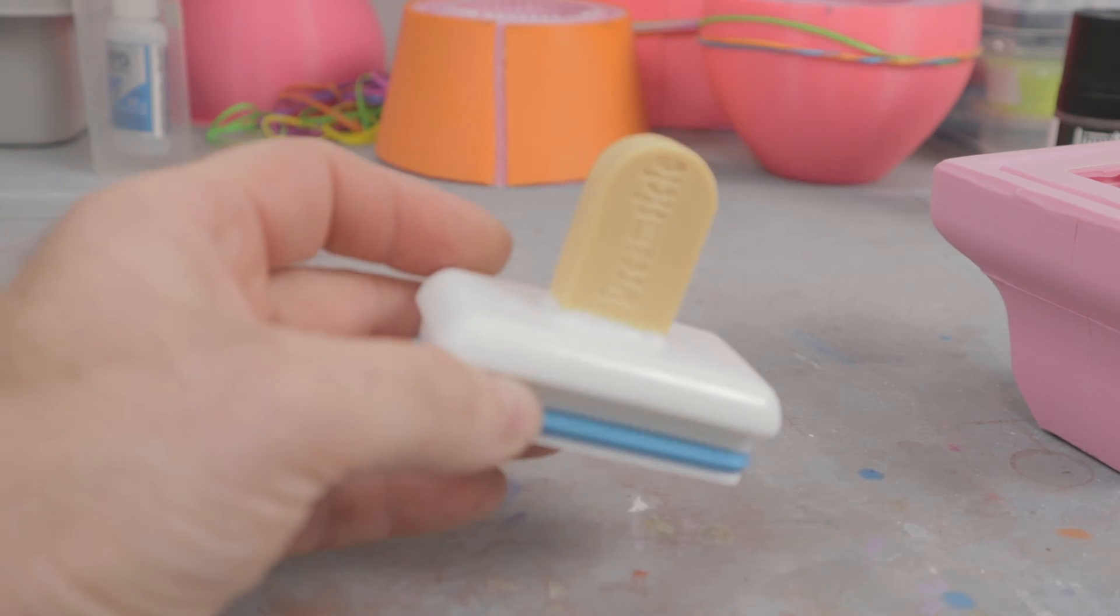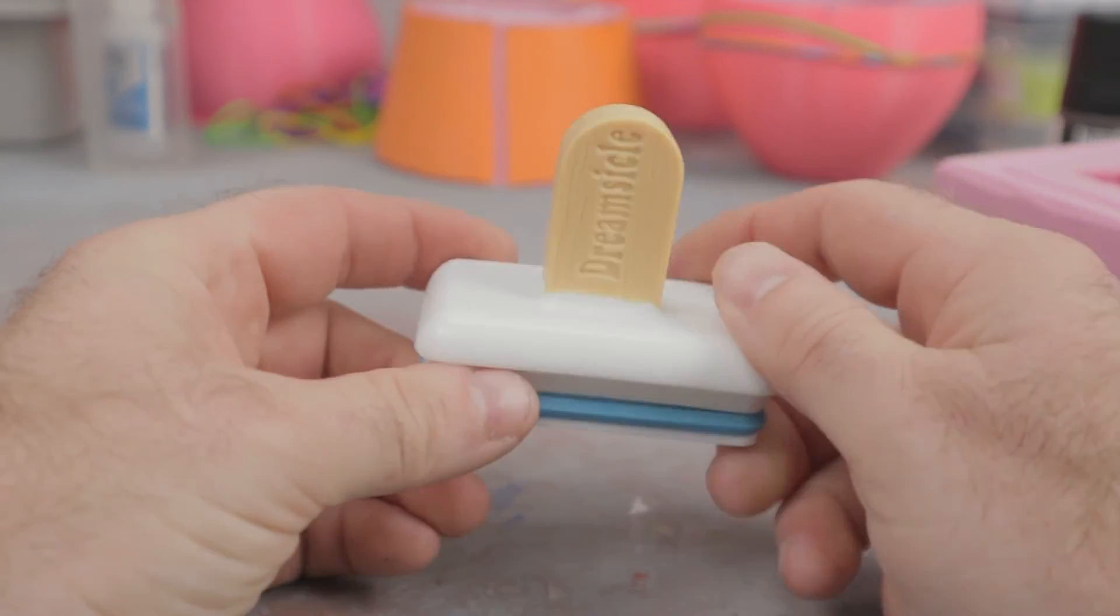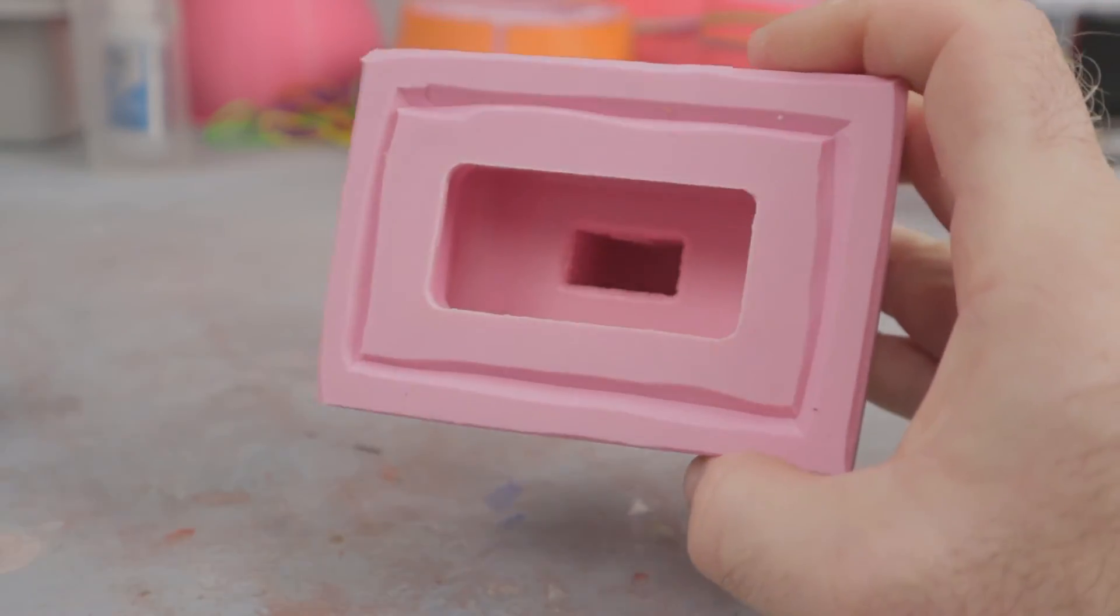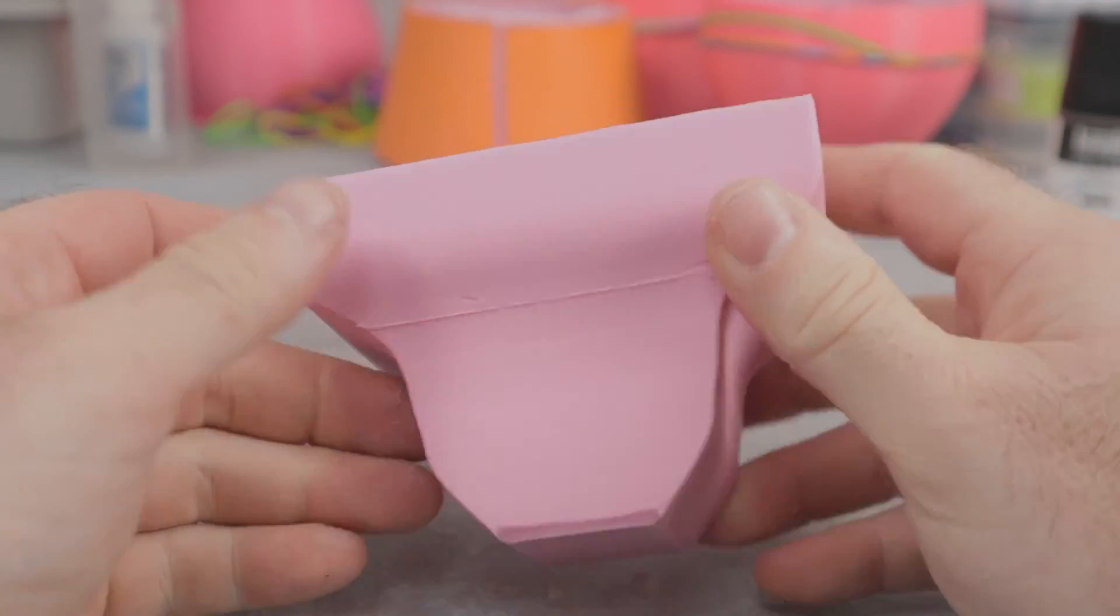Normally, mold makers try to make round molds exactly for this reason, so that the pressure is the same all the way around. But with 3D printed mold cases, you can make square and odd shape molds, and the case keeps everything together correctly.